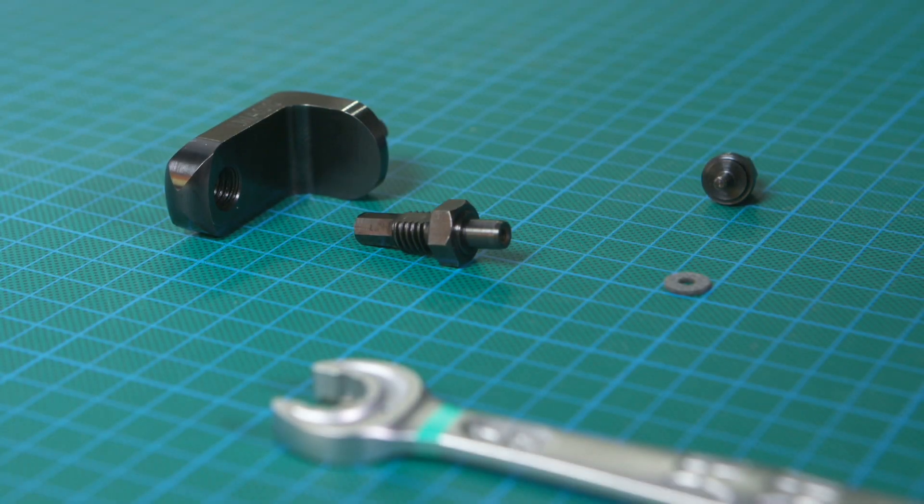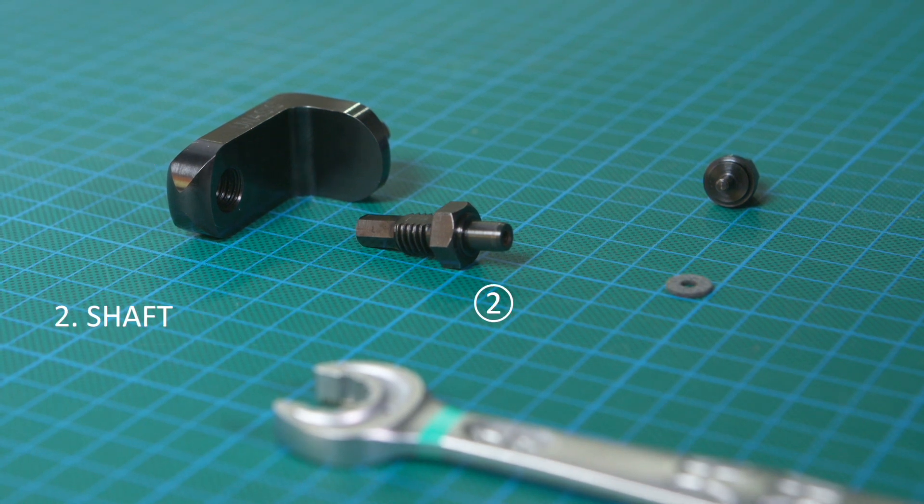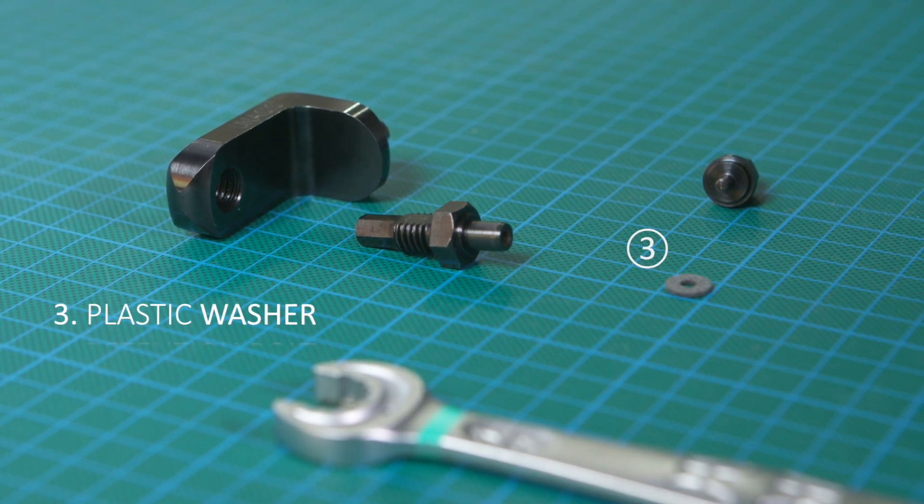Here you see the parts broken up into components: the tool body, shaft, plastic washer, and retention bolt.